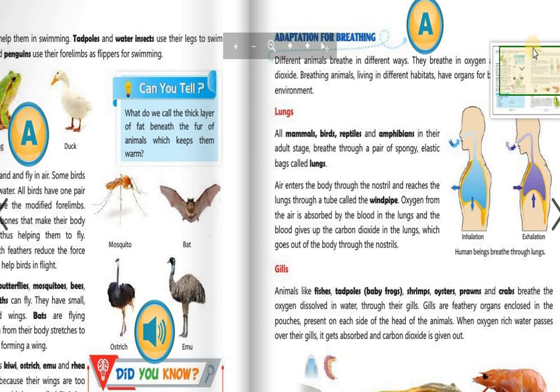Different animals breathe in different ways. They breathe in oxygen and give out carbon dioxide. Breathing animals living in different habitats have organs for breathing to suit their environment.